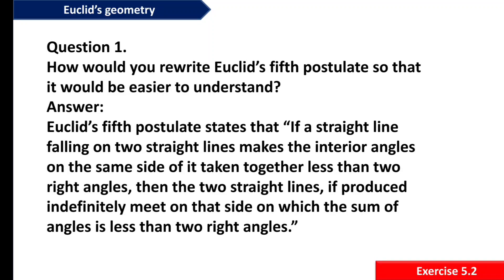Euclid's Fifth Postulate states: if a straight line falling on two straight lines makes the interior angles on the same side of it taken together less than two right angles, then the two straight lines, if produced indefinitely, meet on that side on which the sum of the angles is less than two right angles. When we read this, it feels complicated, so we need to rewrite it to be easier to understand.